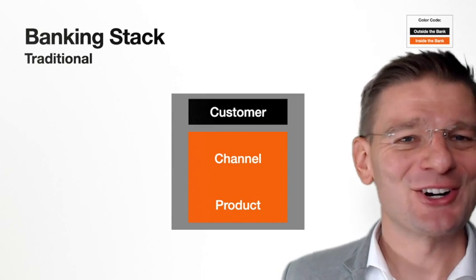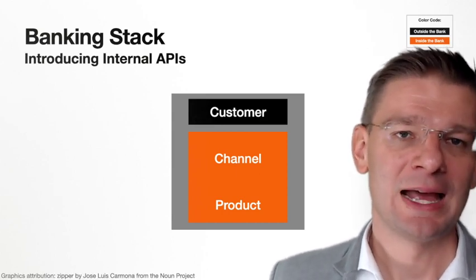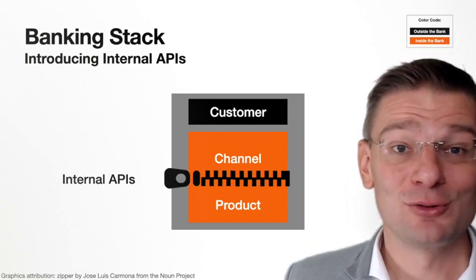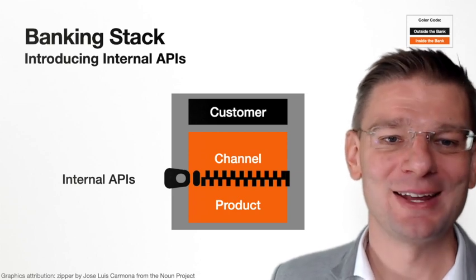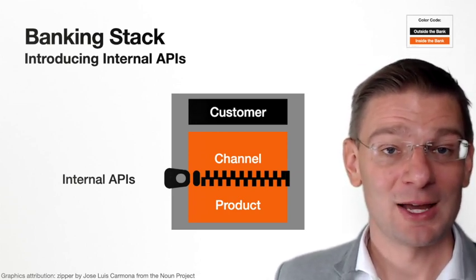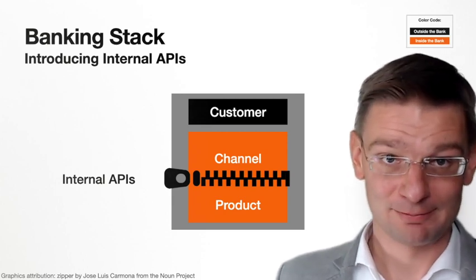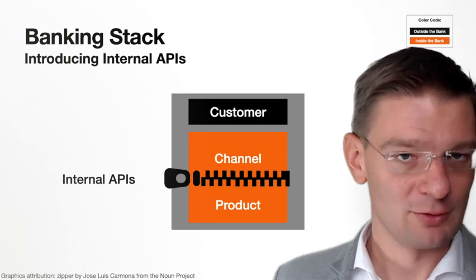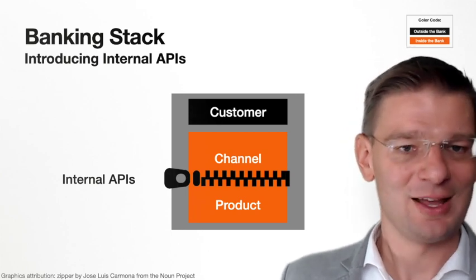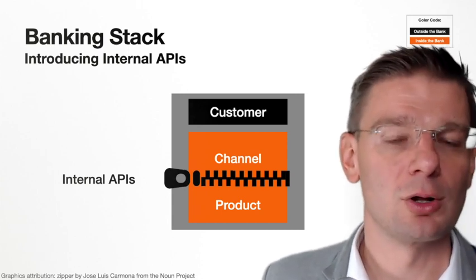Now, banks are introducing APIs — internal APIs. What internal APIs do is introduce a zipper in between the channel and the product. Internal APIs make it possible to separate the channel from the product, but this separation is not visible from the outside. It's still the internal channel and the internal product communicating with each other via an internal API.